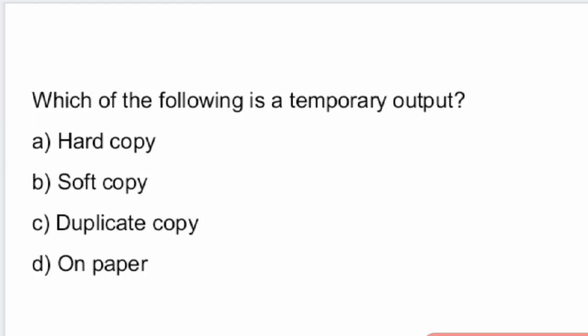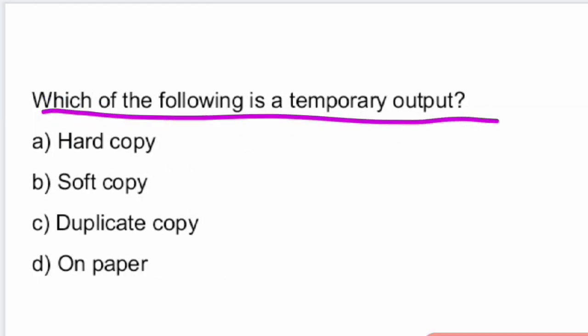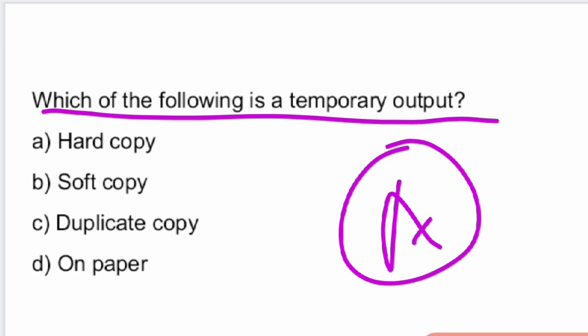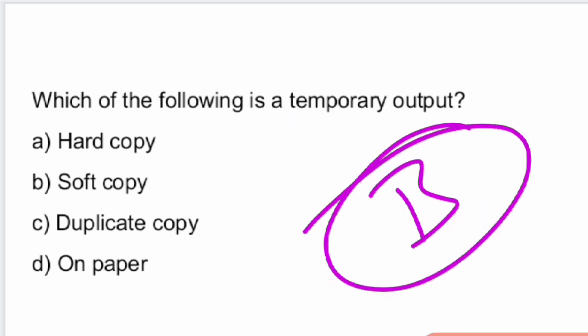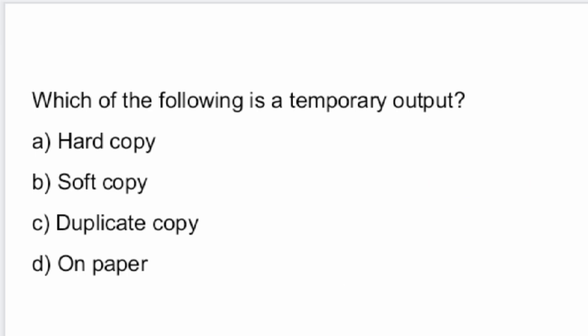Next question: which of the following is a temporary output? The answer is option B — soft copy. Soft copy is a temporary output.